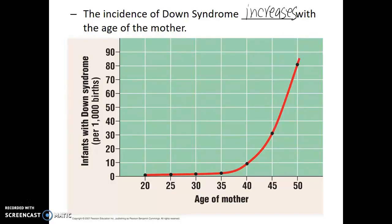This is not the case for males, because males are not born with all the primary spermatocytes they will have. They don't start producing primary spermatocytes until puberty, and from puberty onward there is a constant production of new cells making sperm. That's not to say there are never mistakes in sperm production — it's just that the frequency of those mistakes does not increase as a man gets older in the same way that the error rate increases for females as they age.